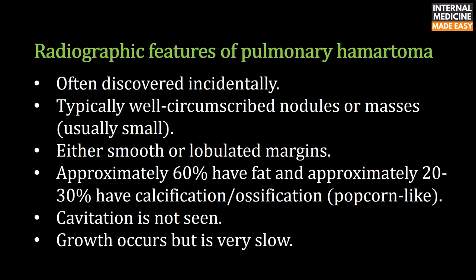Radiographic features of pulmonary hematoma: it is often discovered incidentally as typically well-circumscribed nodules or masses, usually small with either smooth or lobulated margins. Approximately 60 percent have fat and approximately 20 to 30 percent have calcification or ossification, which may be popcorn-like. Cavitation is not seen; growth occurs but is very slow.